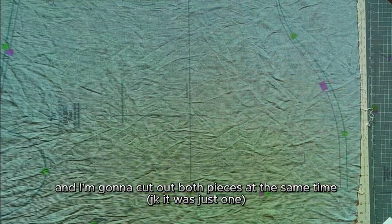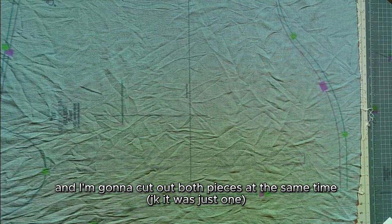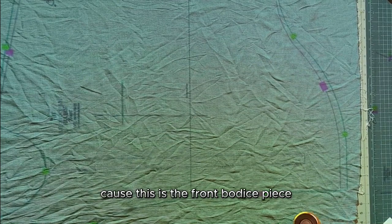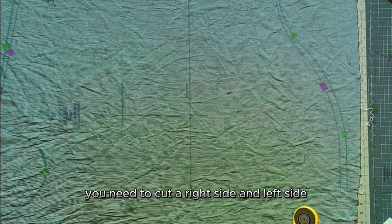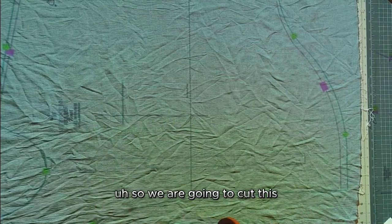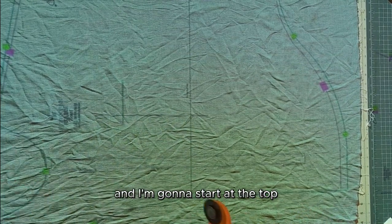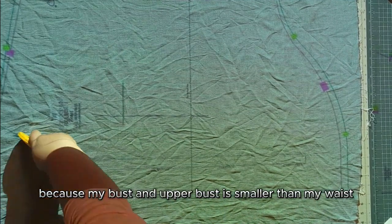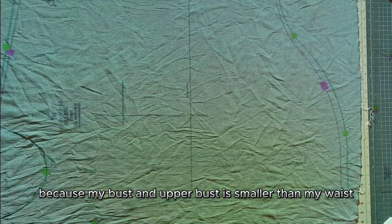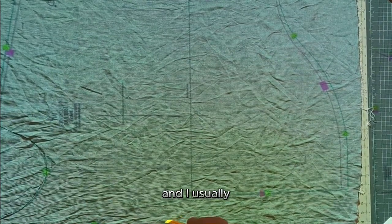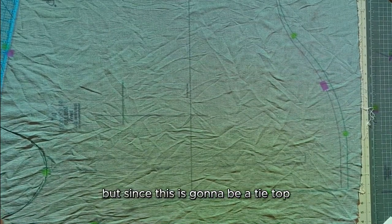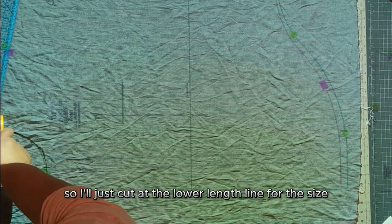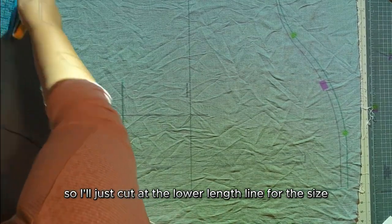And I'm going to cut out both pieces at the same time so that my adjustments are the same on both sides. Cause this is the front bodice piece. And you want to cut two, you need to cut a right side and left side. So we are going to cut this and I'm going to start at the top. I cut a 4x because my bust and upper bust is smaller than my waist and my hips. And I usually add length to tops also, but since this is going to be a tie top, then I'm not going to bother adding length. So I'll just cut at the lower length line for the size.